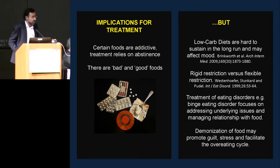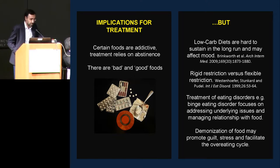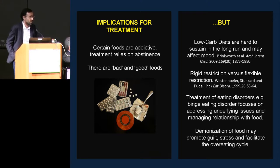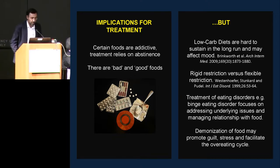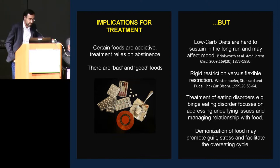Regarding treatment implications: if certain foods are addictive, a pillar of treatment would rely on abstinence, and foods would be labeled as bad. But we have to be aware this has been tried before. We know from the obesity literature that low-carb diets are hard to sustain in the long run and may even affect mood — results from randomized clinical trials. We also know from psychology that rigid versus flexible restriction matters: people who tend toward rigid approaches are more associated with weight gain and binge eating, so flexible restriction is more favorable in the treatment of obesity.